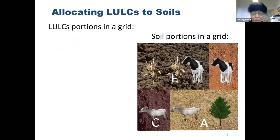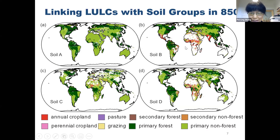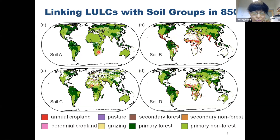We can do this globally. This is an example where we allocate land use and land cover types in the year 850 across four different soil groups. As you can see, soil B is the best soil, so most of the agriculture and pasture is located on the best soil, while soil A is poor soil, and in 850 most of soil A remains untouched.